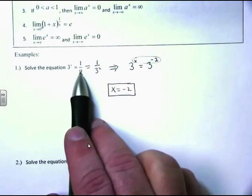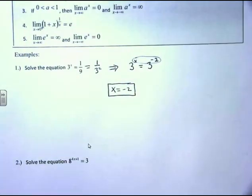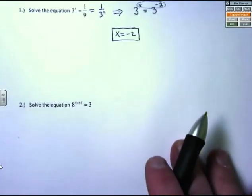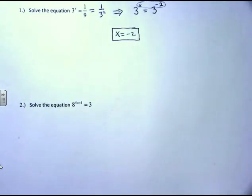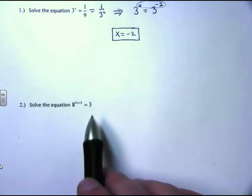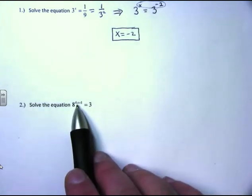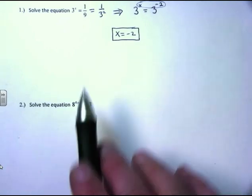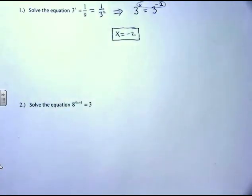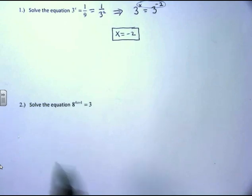This was a nice equation because I could write both sides as base 3. Now look at this next equation: solve 8 raised to the (4x + 1) equals 3. There's no way to write 3 in terms of base 8, so I want to solve for a variable in the exponent. Anytime I can't match the bases, there's only one thing that solves for exponents: logarithms. We focus on two kinds — common logs and natural logs, log base e.